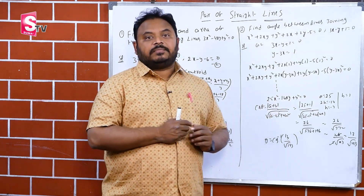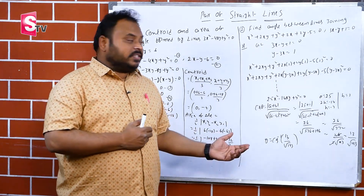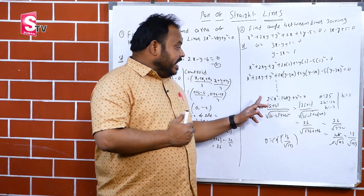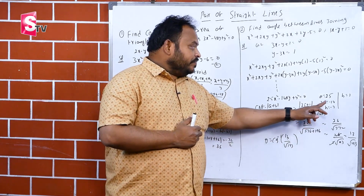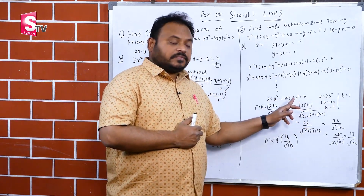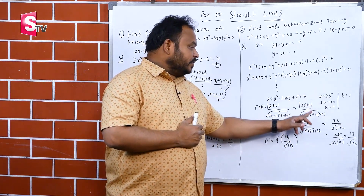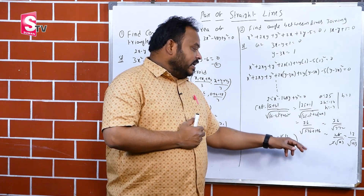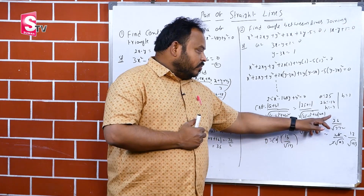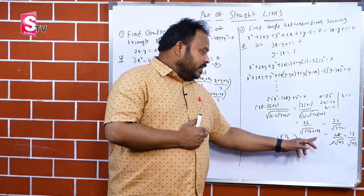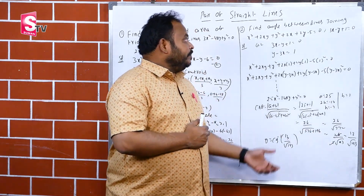Now we apply the cos θ formula for the angle between pair of lines: cos θ = |a+b| / √((a−b)²+4h²). Comparing 25x²−14xy+y²=0 with ax²+2hxy+by²=0: a=25, 2h=−14 so h=−7, b=1. Then a+b=26, (a−b)²=24²=576, 4h²=4×49=196. So cos θ = 26/√772 = 26/(2√193) = 13/√193.